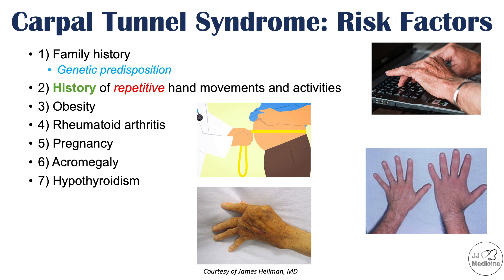Hypothyroidism — low thyroid functioning — can also cause carpal tunnel syndrome by causing swelling in the extremities, including the wrist, leading to compression of the median nerve. Scleroderma is another risk factor, as collagen deposition in this condition can also cause compression of the median nerve.